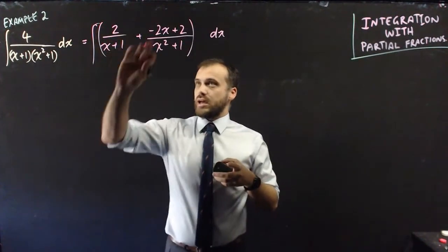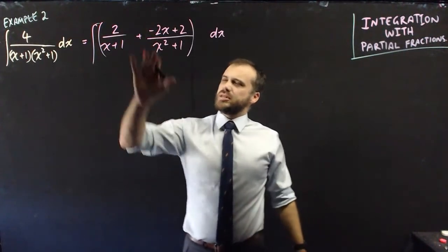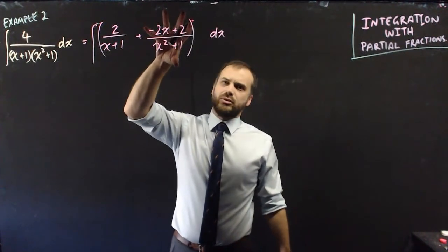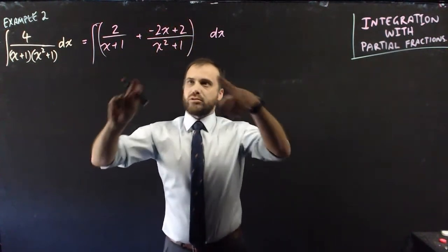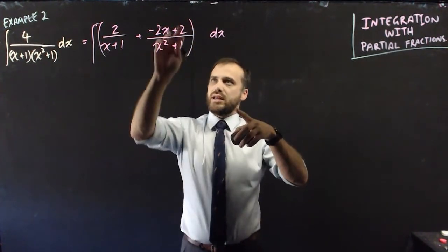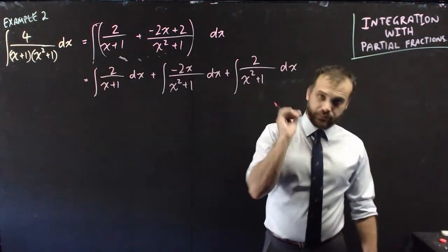Now we could integrate that and then integrate that. The problem is that I don't know how to integrate that as a single block. But luckily I can break it up into negative 2x over that and 2 over that. So we're looking pretty good here.